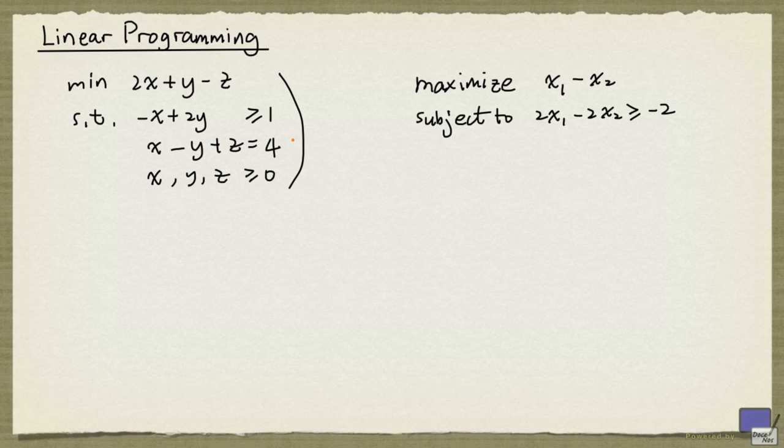Note that in the case of minimization, the minimum value might not exist. And in the case of maximization, a maximum value may not exist. For example, there's no upper bound on x1-x2 if the only constraint that we have is here.